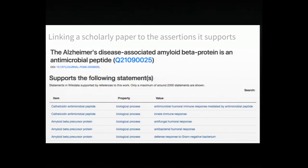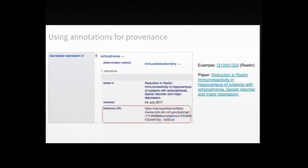We can link a scholarly paper to very specific assertions that it supports. In this example, you can retrieve all the statements that Wikidata knows about that are extracted from a specific paper — for example, statements that a specific protein has a specific function or serves a specific biological process. Wikidata is also pretty agnostic in how it represents references. You can see that a statement is sourced to a specific paper, but there's a further qualifier that allows you to identify through an annotation the specific fragment and location in that paper where the statement can be found, providing support beyond a traditional citation.